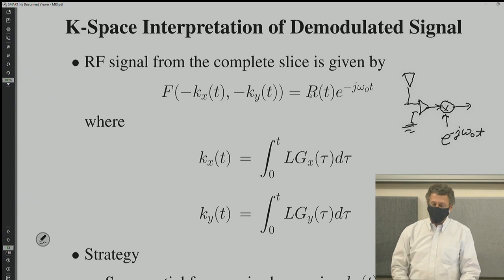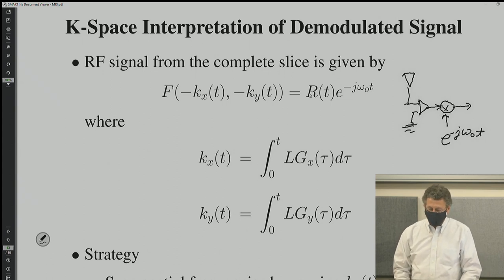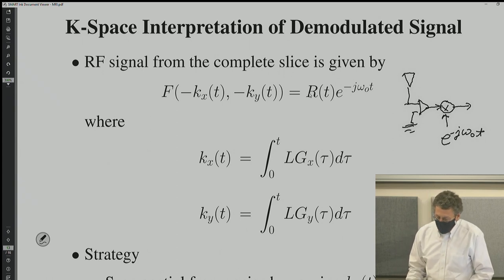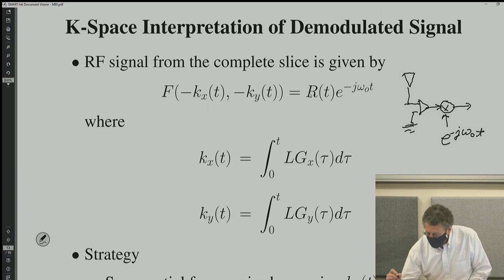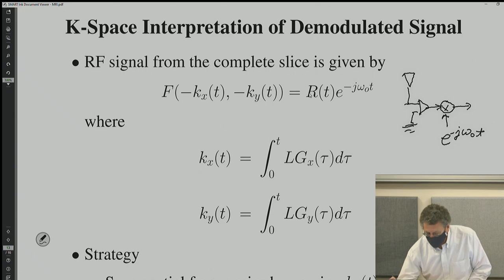It's essentially multiplied by e^(jω₀t). It's called demodulation. This is the demodulated signal. The pen here is okay, but it's not that great, so I can't write very precisely.